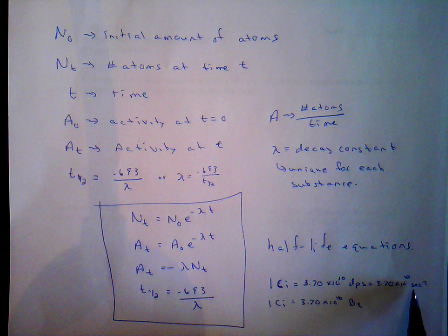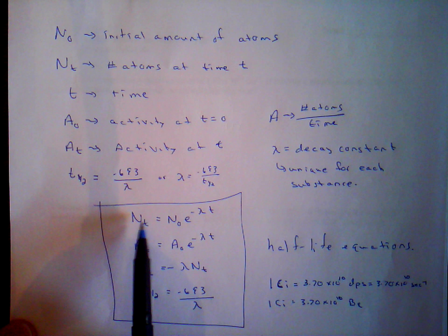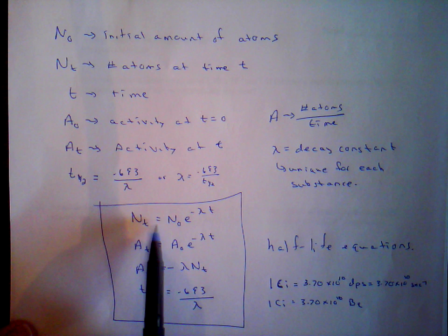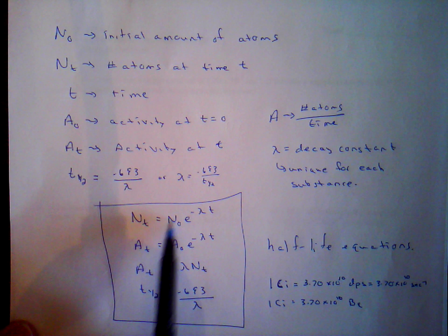Activity A is the number of atoms per time. Looking at the decay equation — this is the number of atoms at some time period and this is the initial number of atoms. If we divide both sides by time, we get the activity: number of atoms per unit time over initial number of atoms per unit time. So these two equations are the same, just whether you're given the number of atoms or the activity.